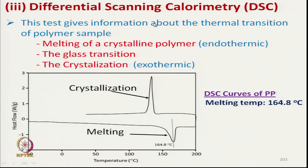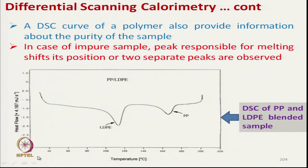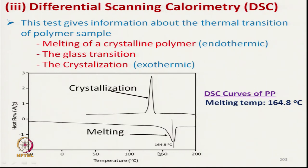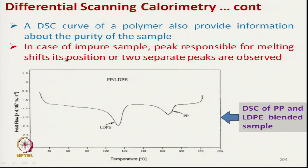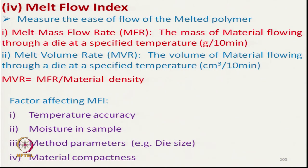DSC (differential scanning calorimetry) is used for measuring the melting point and also gives an idea about the purity of the material. If the polymer is pure, we will get a single peak. In the case of a mixed or impure sample, the polymer will show multiple peaks. For example, a mixture of PP and LDPE gives two peaks.